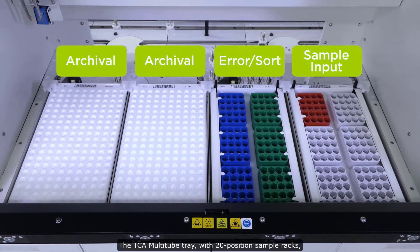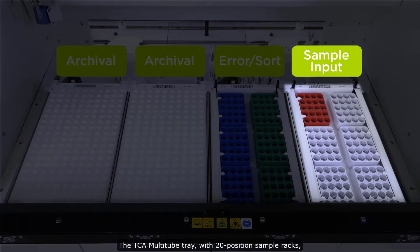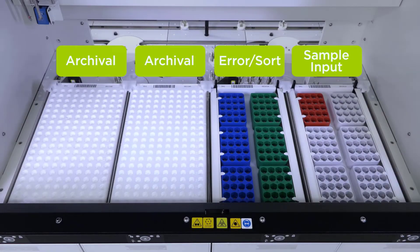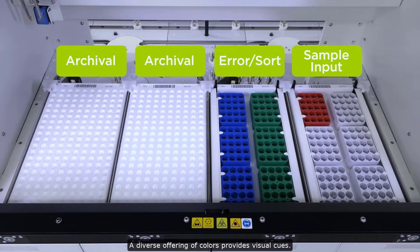The TCA multi-tube tray with 20 position sample racks is typically used in the input and error/sort drawers of the ESFlex. A diverse offering of colors provides visual cues.